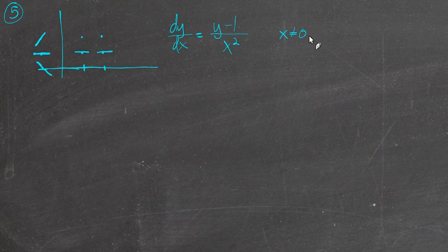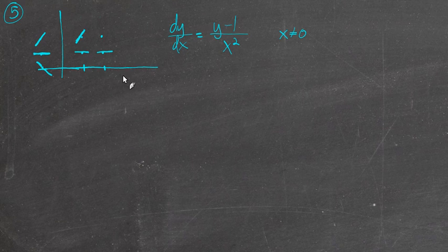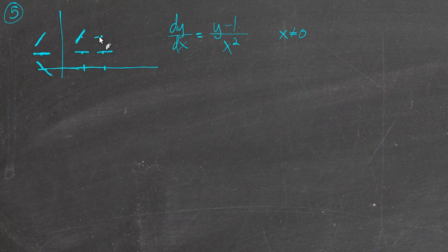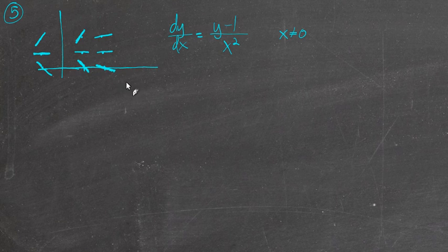Remember the instructions say don't draw the slope field for any x value that's 0, so we'll come over here. At 1 comma 2: 2 minus 1 is 1, and that's a 1, so we should have a slope of 1. At 2 comma 2, that's going to give us 1 over 4 — up 1 and over 4, so not too steep. At 1, 0: 0 minus 1 is negative 1 over 1, which is negative 1. Then at 2, 0 we're going to get negative 1 fourth.